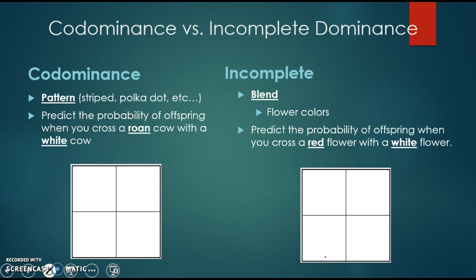Let's move on to non-Mendelian genetics. The two problems that are easily confused with each other are codominance and incomplete dominance. Let's start with codominance. When you think of a co-captain of a team, they are both present at the same time. In codominant examples, you will see both traits expressed at the same time—a pattern is formed, like black and white stripes, polka dots, or squiggly lines and circles.